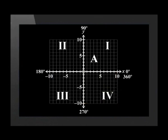All trig ratios are positive in Quadrant 1. Only sine is positive in Quadrant 2; the other ratios are negative. Only tan is positive in Quadrant 3; the other ratios are negative. Only cos is positive in Quadrant 4; the other ratios are negative. This is often referred to as the CAST diagram. Remember that you need to know all of this off by heart.